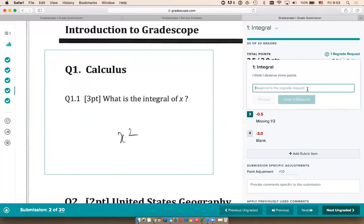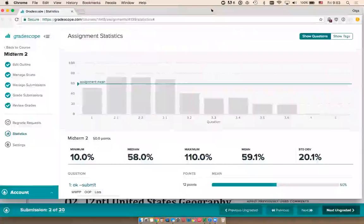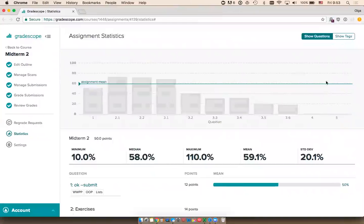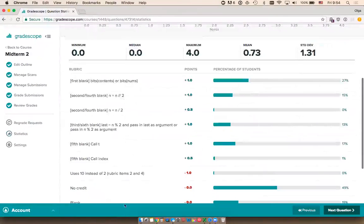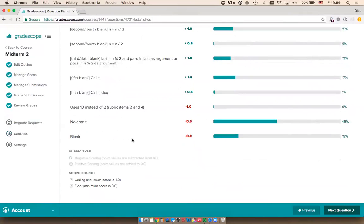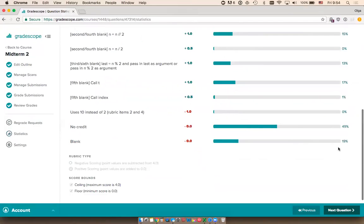The last thing I want to show you is one feature that a lot of instructors find useful on Gradescope: our assignment statistics page. What we're looking at here is the statistics page for a real computer science midterm at UC Berkeley that the instructor kindly let us use. I can immediately see the mean score for each question on this exam. I can see that students didn't do well on question 3.6. As an instructor, I might ask: is that because that question was towards the end of the exam and students ran out of time, or because they were actually struggling with the concept? I can get that insight by looking at the rubric item level analysis.